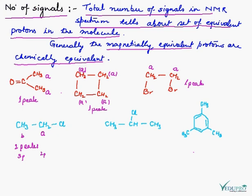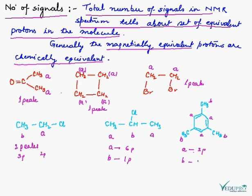Here we will have 3 NMR signals. In this case, we will have 2 peaks which will correspond to 6 protons and 1 proton. If we look at the structure, these groups are CH2 type — A, A, and A — these are one type of proton, and these are B type of protons. So A signal will be 3 protons equivalent and B signal will be 9 protons equivalent.